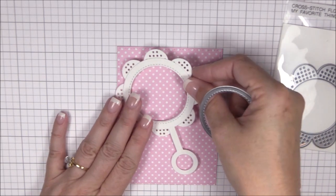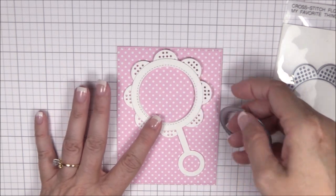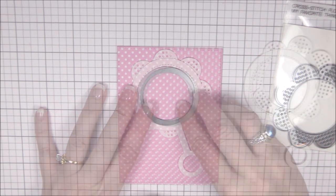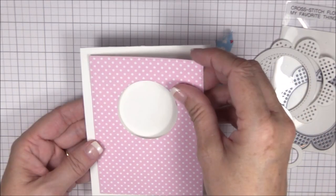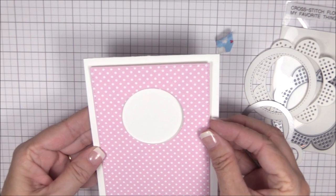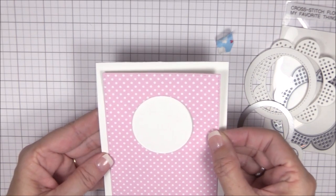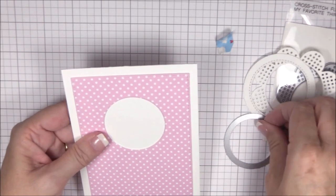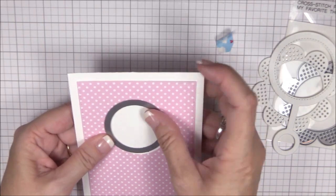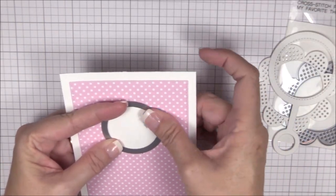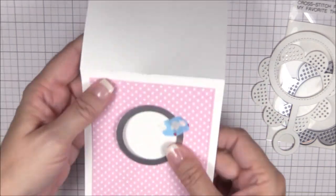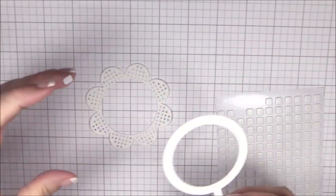I'm positioning the baby rattle onto the polka dot panel and I'll use the circle die from the shaker flower die-namics to die cut the aperture for the rattle. Once that's done, I can position the polka dot panel onto the front of the smooth white card base and use that same die again to die cut another aperture in exactly the same spot. This is a great way to make sure that both apertures line up perfectly. And don't forget to open up your card base before running it through your die cutting machine.